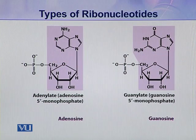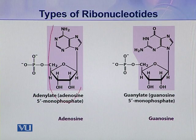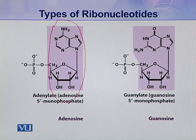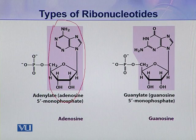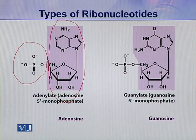As you can see, this coloured portion is a nucleoside. A pentose sugar and a nitrogenous base, when they combine, make a nucleoside. Here the nitrogenous base is adenine, so this nucleoside is adenosine. When a phosphoric acid is attached to this adenosine, it becomes a nucleotide — so this adenosine becomes adenylate.